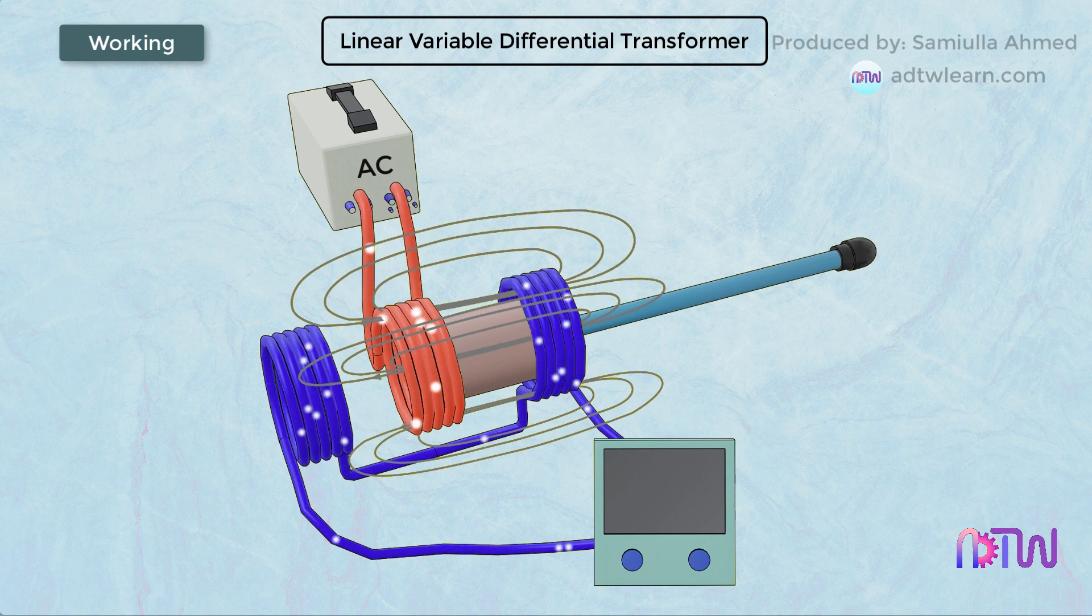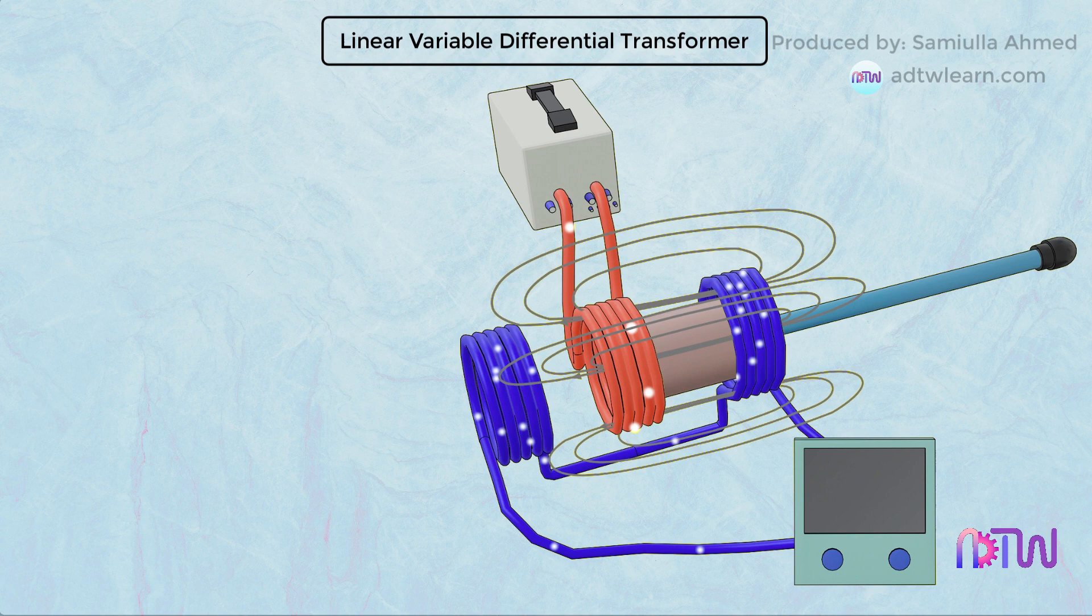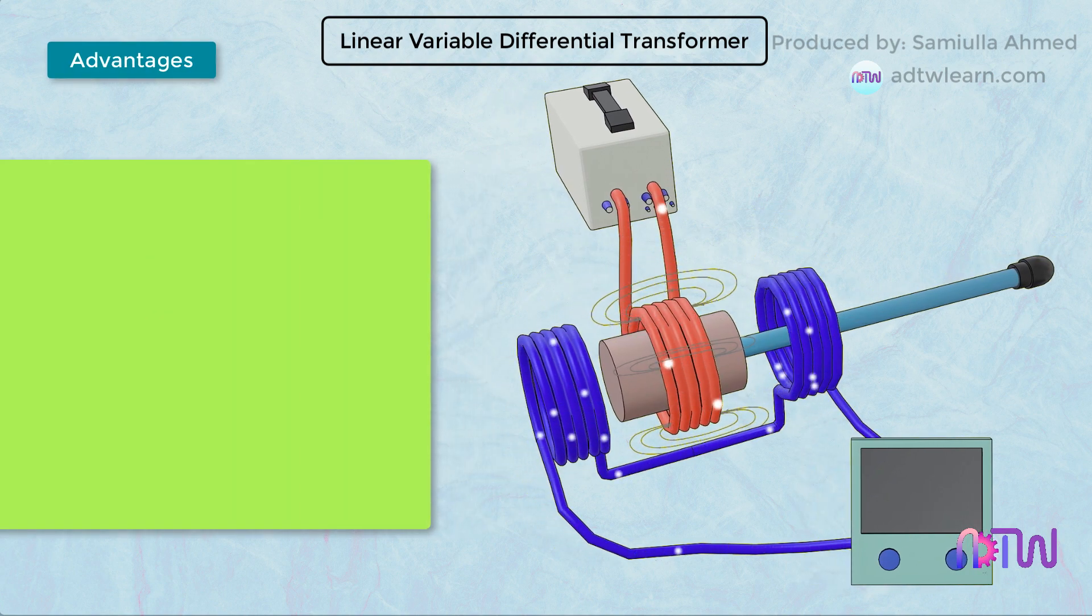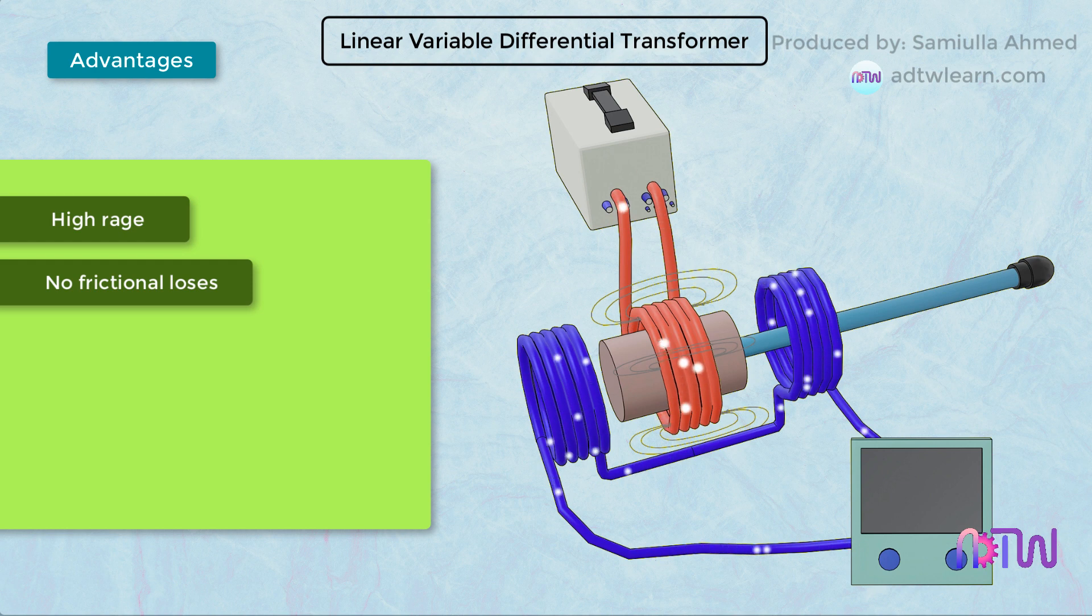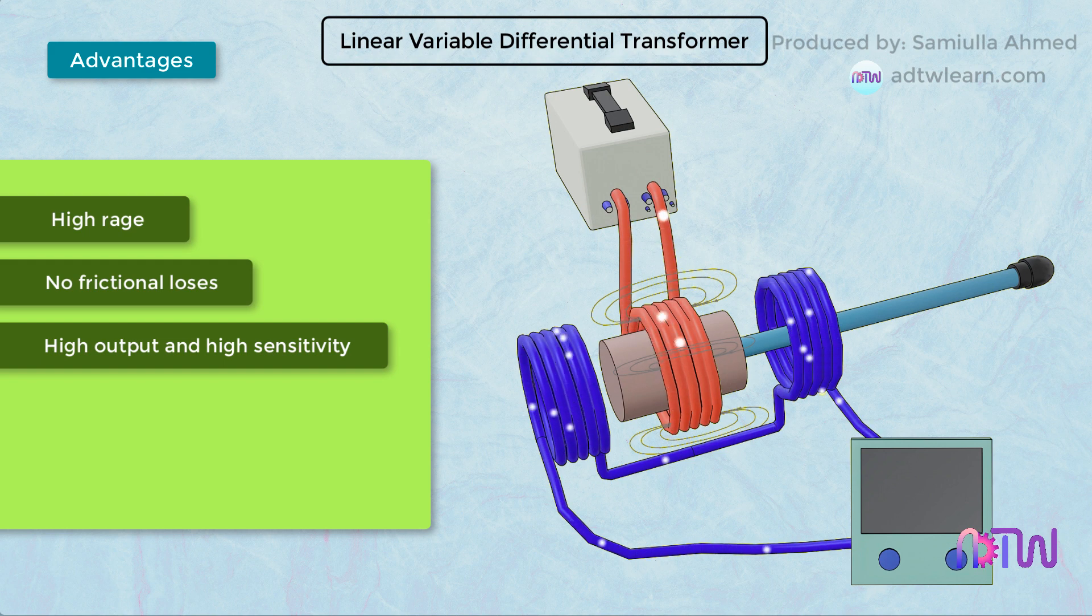Advantages of LVDT: High range - LVDT has got a high range of displacement measurement. No frictional losses - thus accuracy of the LVDT is high with high output and high sensitivity. The output of the LVDT does not require any further amplification. It has got low hysteresis, thus has got good repeatability. Rugged in construction.